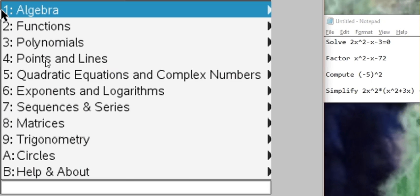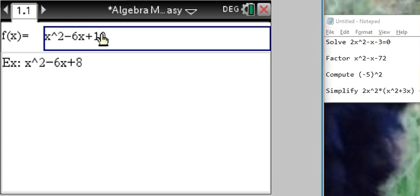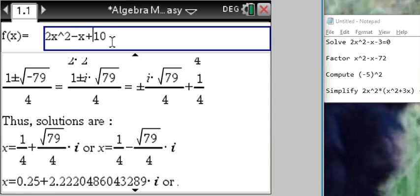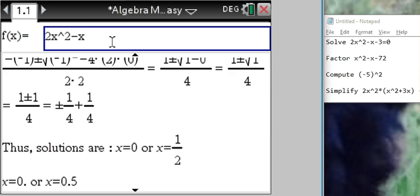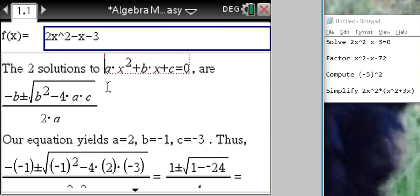Let's do the quadratic equation, so we go to menu option 5. We just enter the quadratic equation without equal 0, so we're going to enter 2x² minus x minus 3. We don't have to press enter, the answer shows right away.